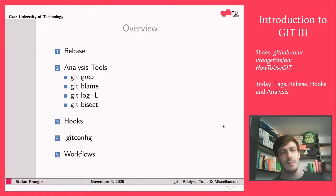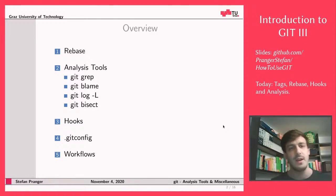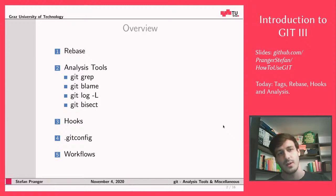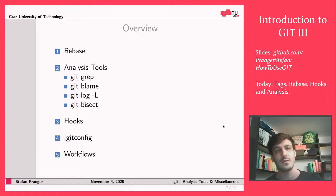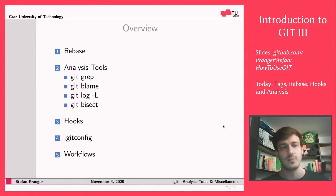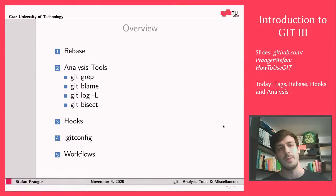We're going to cover git rebase — both standard and interactive — then git grep, git blame, git log with the -L option, and git bisect. After that, we'll look at how to automate things with git hooks, then what a global git config could look like, and finally how a possible workflow in a software project using git with GitHub might look.